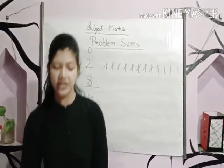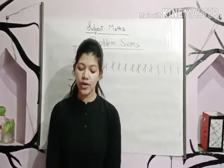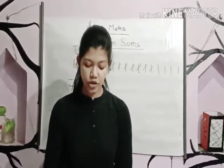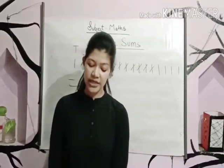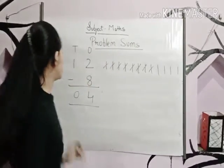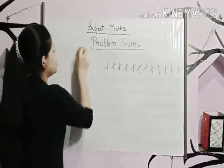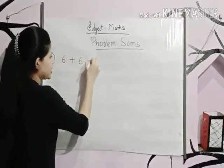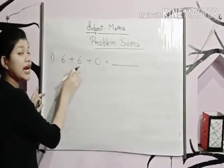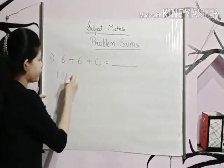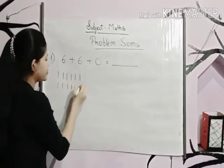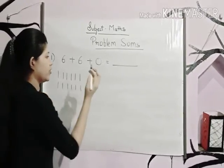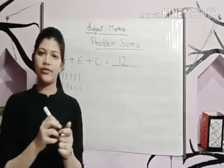Now let's come to page number fifty-six — Chapter Test. First one: solve the following addition and subtraction. This you know how to do, you will do yourself. Question number two: fill in the blanks. Six plus six plus zero is equal to dash. We add six plus six to get twelve, then add zero, so the answer is twelve.